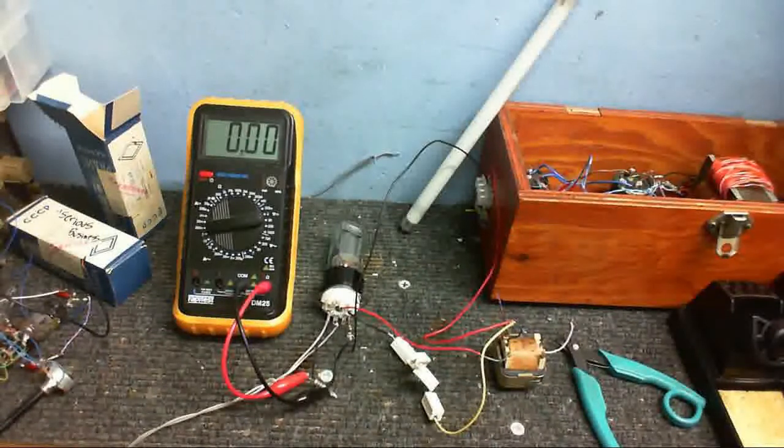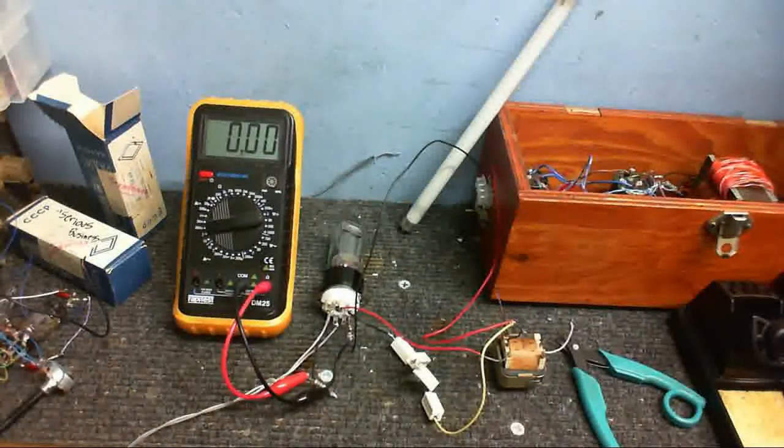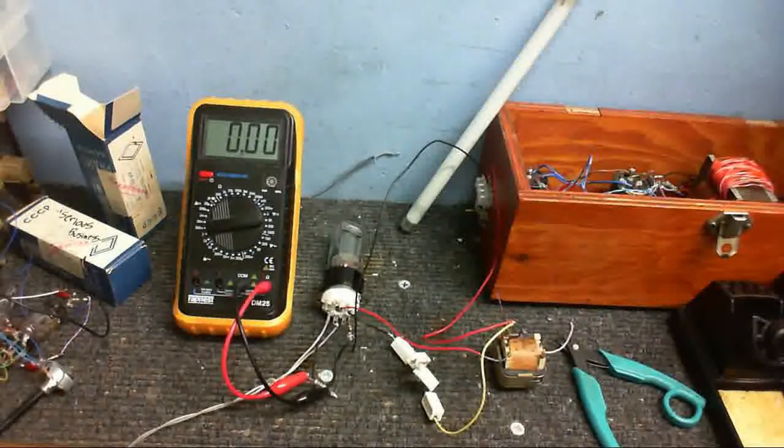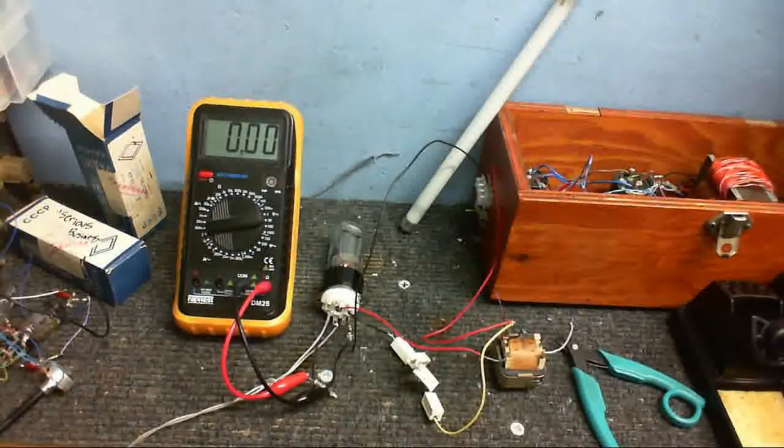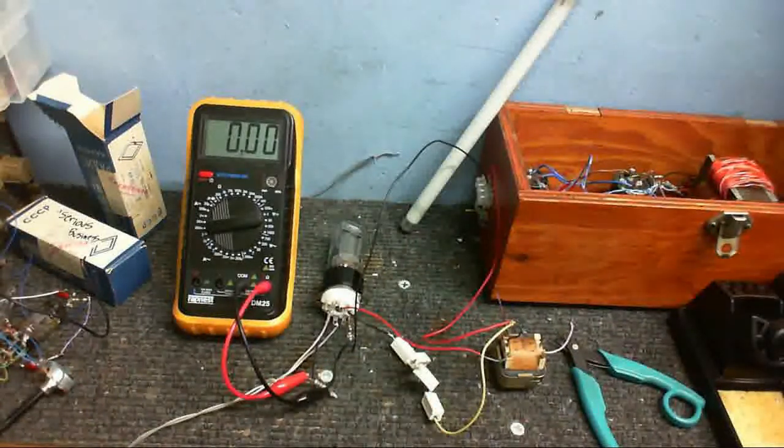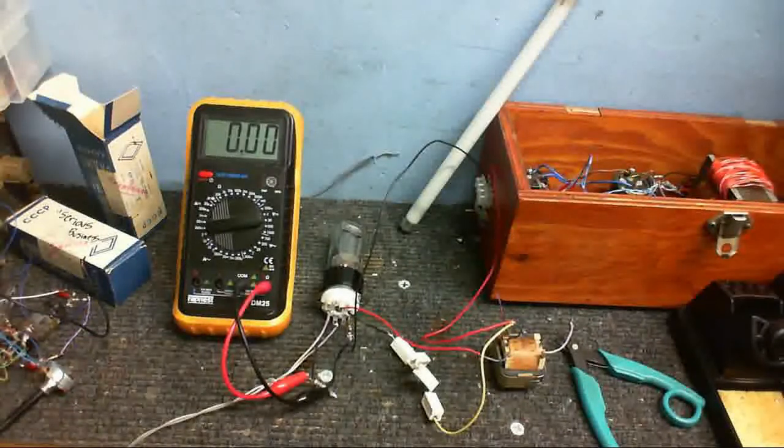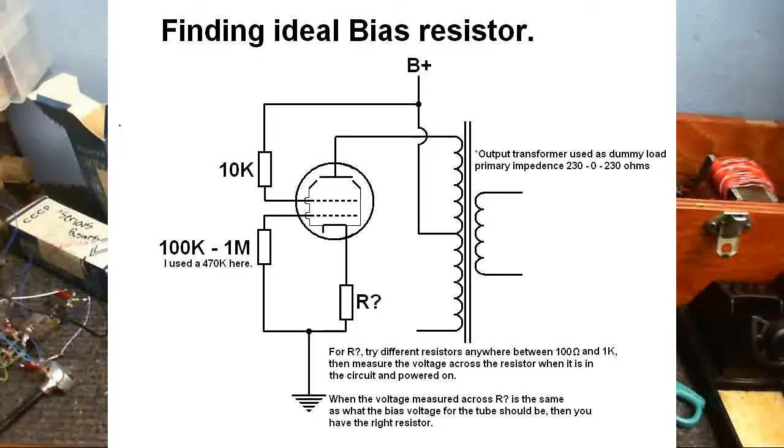So what I'm going to do is measure the voltage that we see across this resistor. I'm just going to wait for that to get up to its full temperature. If the voltage across this resistor is too low, then I'll use a resistor of a larger value. If the voltage is too high, I'll lower that resistor. So anyway, I'll go over the circuit while it's warming up.